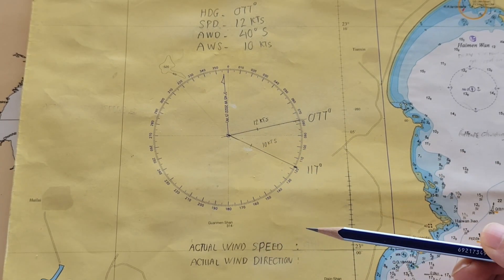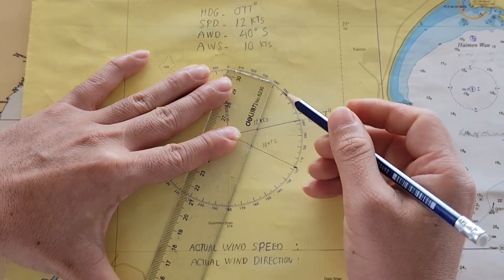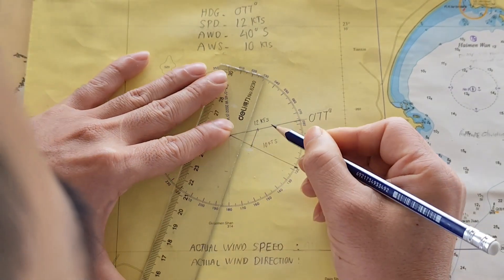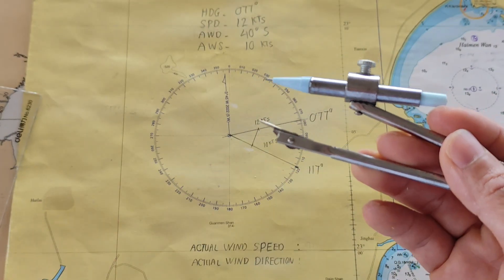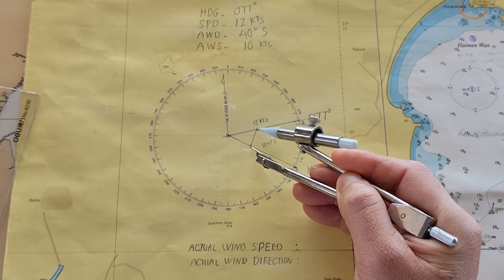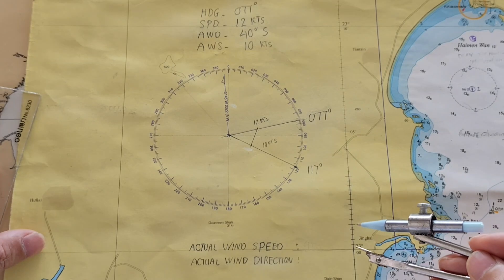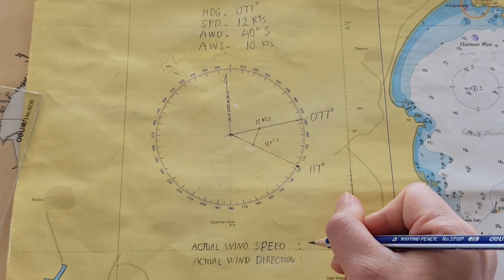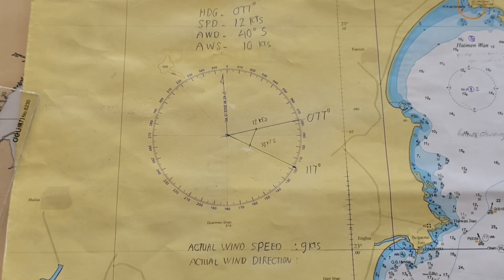Here I get the apparent wind speed of 10 knots marked. Now I will connect the ship speed point and the apparent wind speed point to get the actual wind speed. You can use the compass to measure the line from ship speed to apparent wind speed and check that on the scale — it comes to approximately 9 knots.